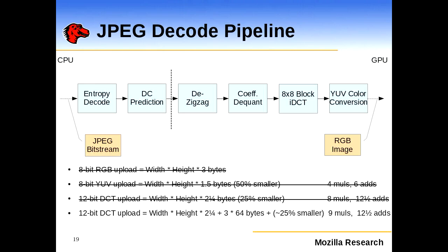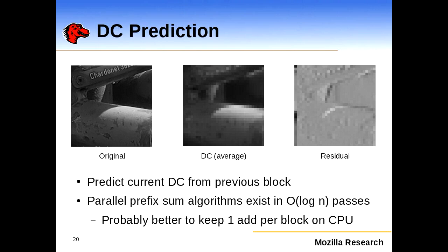Now we're getting to things that may be harder to do on a GPU. DC prediction: the DC value for every 8x8 block is basically the average color for that block, and DC prediction codes only the difference from the previous block's DC value, so we only code a delta. Doing the decode requires one add per block, but it's completely serial. There are ways to undo DC prediction in parallel using a prefix sum, but it's probably not worth it since it's just one add per block and we could do it on the CPU.